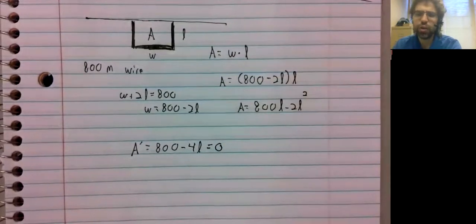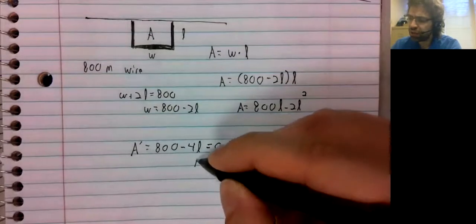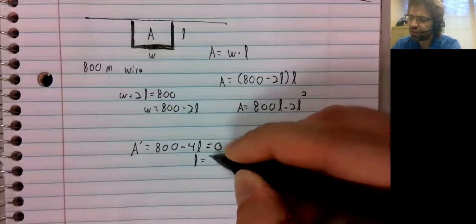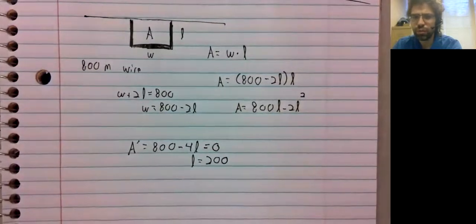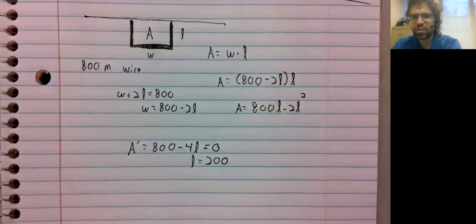There's only one critical value from setting this equal to zero. And that's that the length should be 200.